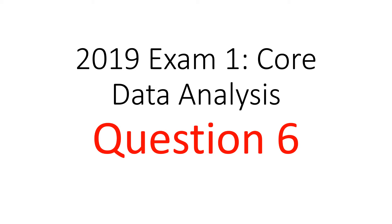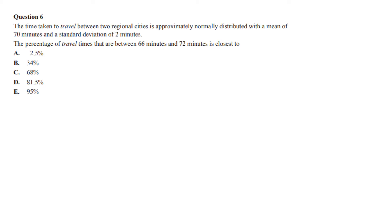2019 exam, core data analysis, question 6. The time taken to travel between two regional cities is approximately normally distributed. That means you're going to be doing z-score calculations, and they're giving you a mean of 70 and a standard deviation of 2.